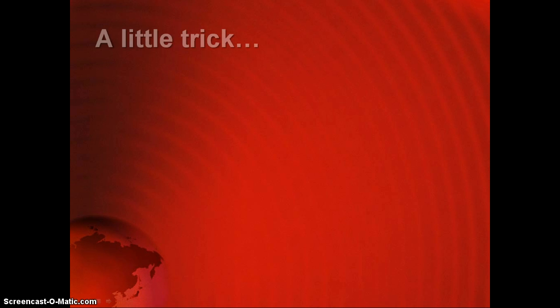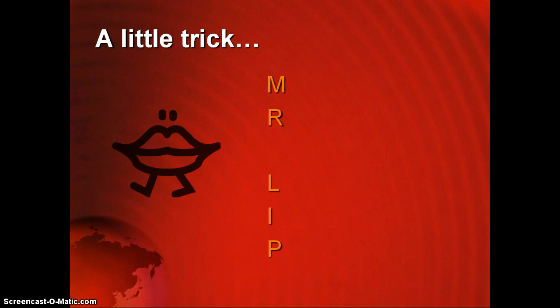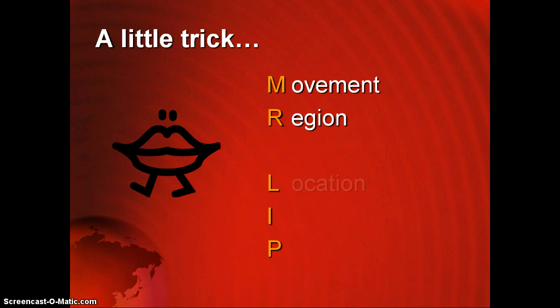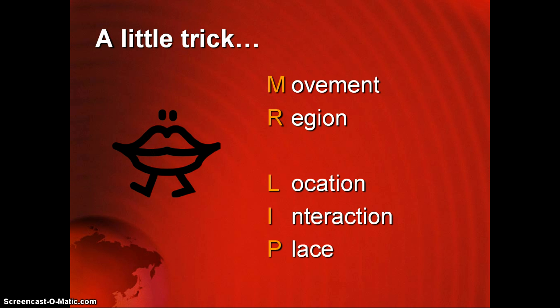You've been given a lot of information. To help you remember the five themes of geography, remember: Mr. LIP. M is for movement, R is for region, L is for location, I is for interaction, and P is for place. Thank you.